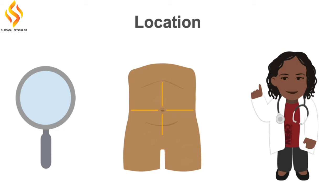Diverticulitis typically causes pain in the left lower abdomen, where most colonic diverticula are located. Pain from the gallbladder, such as biliary colic or cholecystitis, typically is felt in the middle upper abdomen or the right upper abdomen, near where the gallbladder is located.